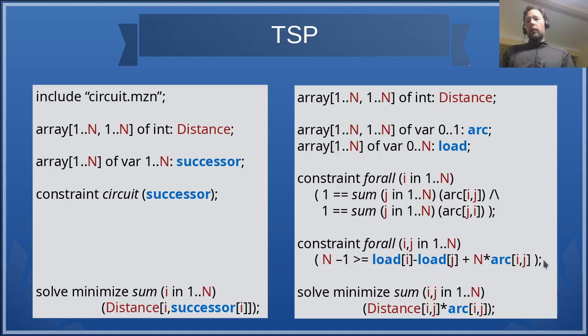Similar to traveling salesman. On the right we have one of several MIP formulations. On the left we have a high level circuit constraint with an array of successor variables.